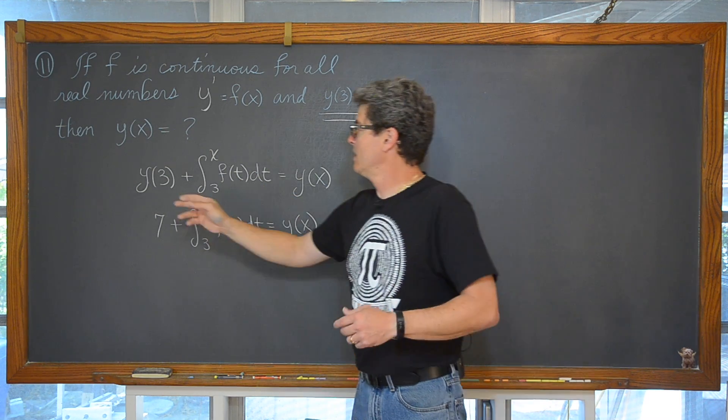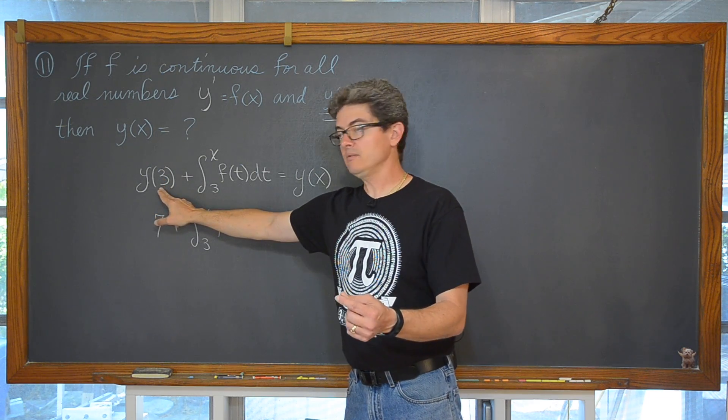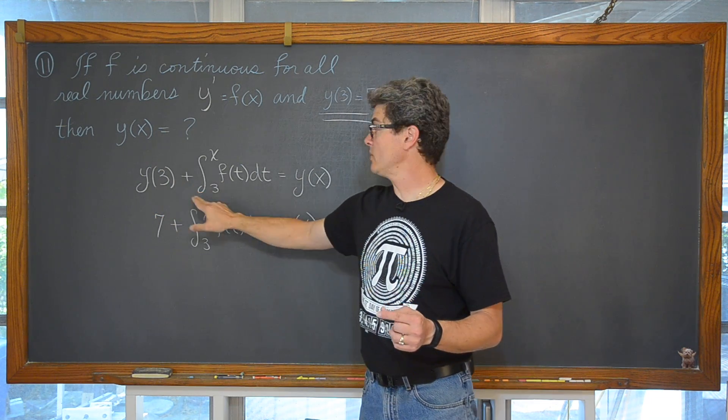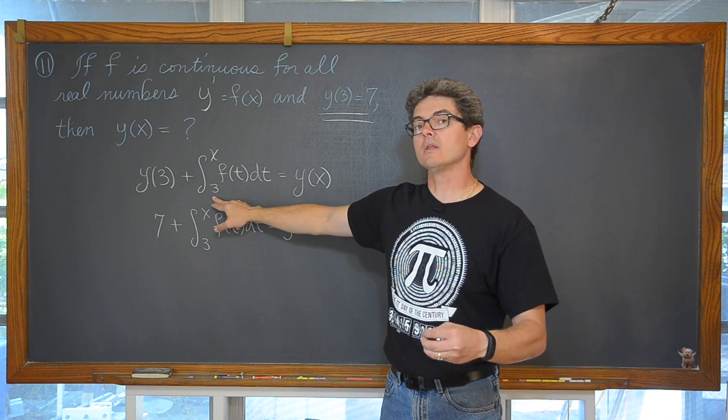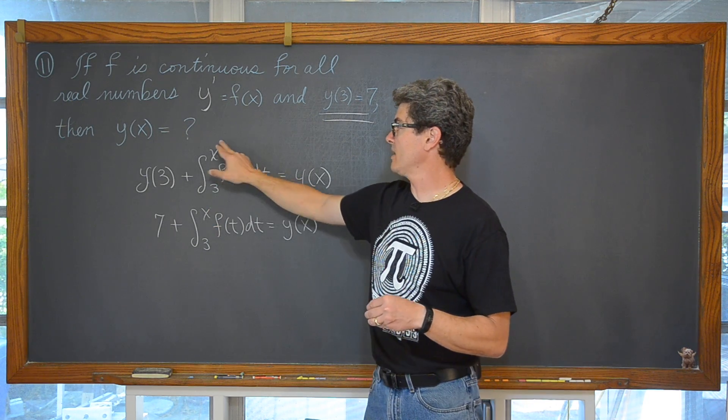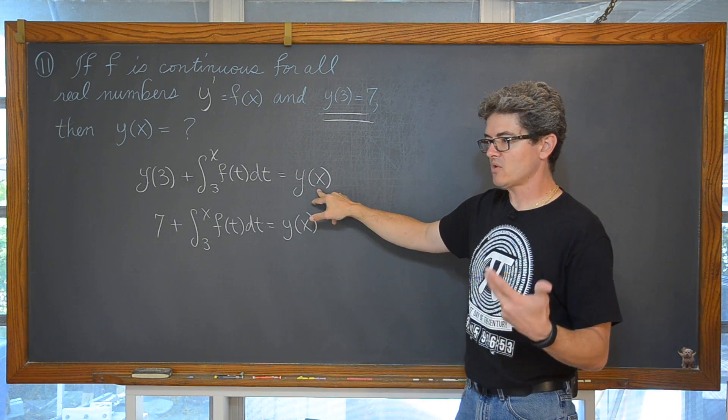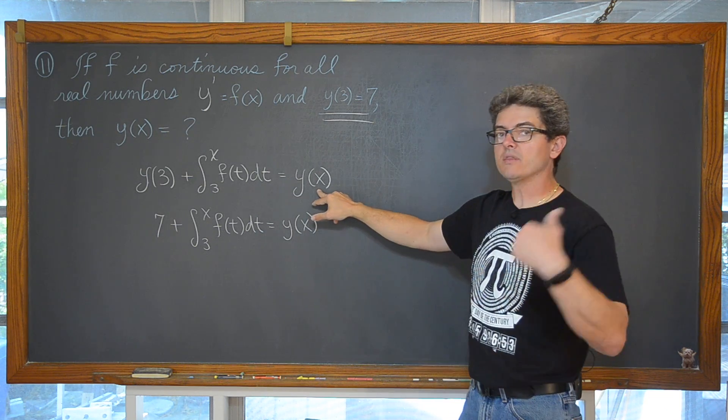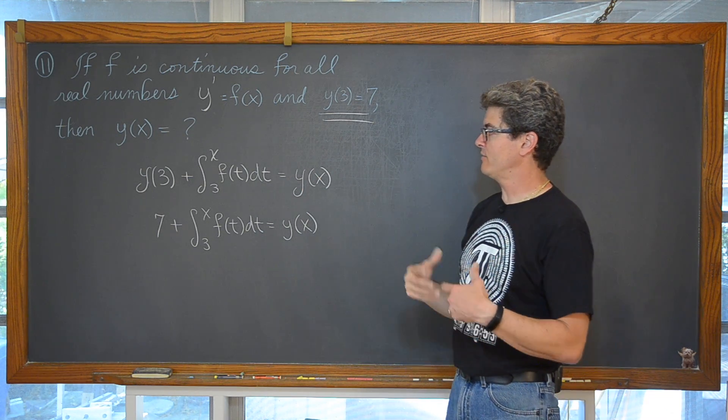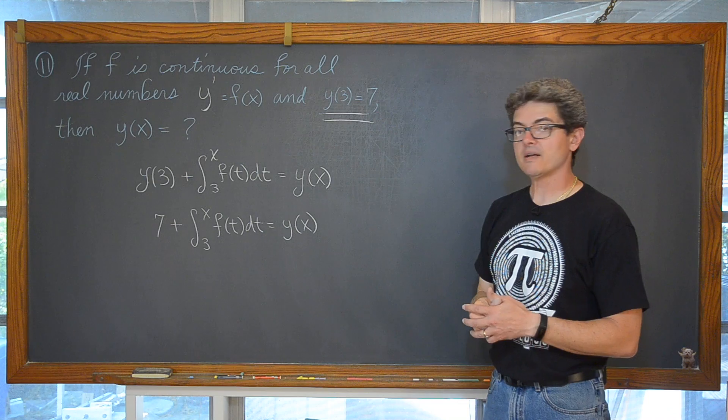So just like before, start with the initial condition. That domain value is where you set the lower limit to your definite integral to and the upper limit is that domain value where you want the final estimation of y of x at.